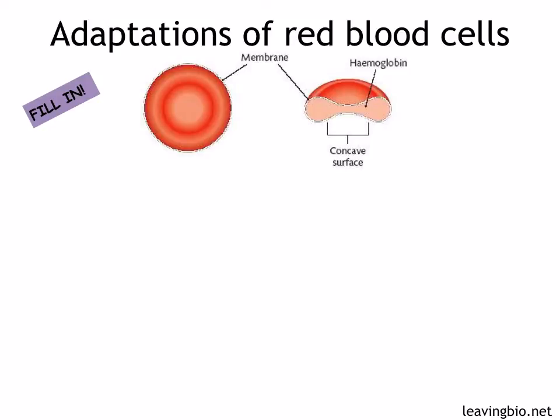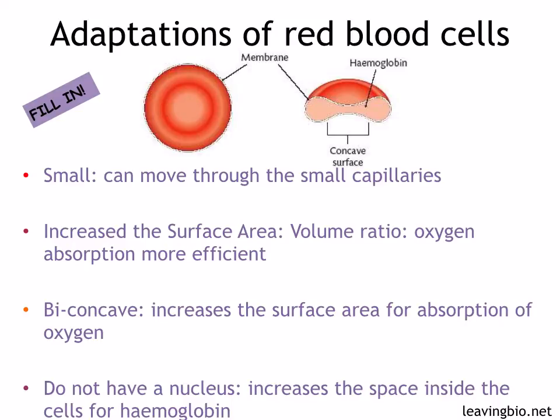Red blood cells have special adaptations that help them to transport oxygen. They are small, so they can move through the small capillaries. They've got an increased surface area to volume ratio, which means that oxygen absorption is more efficient. They are biconcave, which increases the surface area for absorption of oxygen. And they do not have a nucleus, which increases the space inside the cells for hemoglobin.